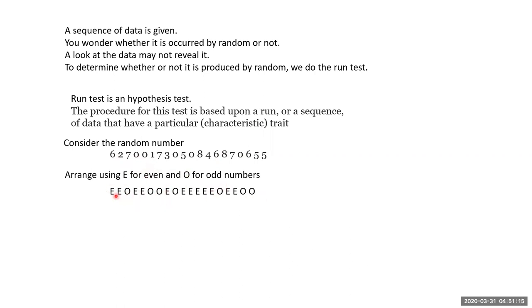Consider the random number 0 2 7 0 1 7 3 0 5 0 8 4 6 8 7 0 4 0 5 5. I rewrite this using E and O. Then I rewrite by combining the E's together and O's together. If there are two E's together, I will combine it as a block. I bring whichever are together as blocks.